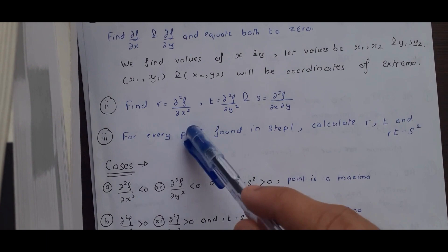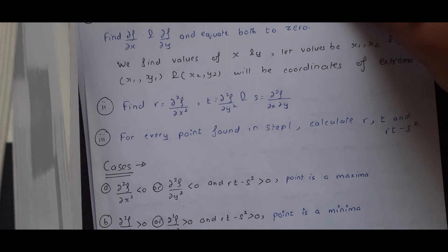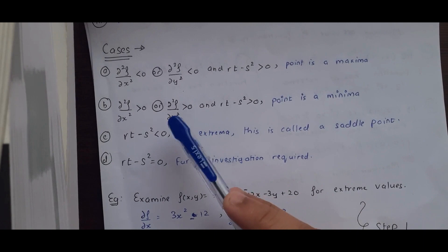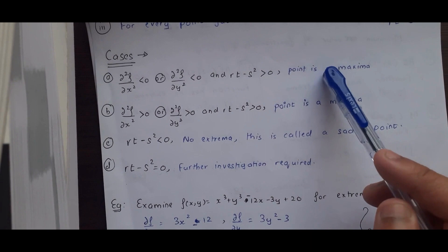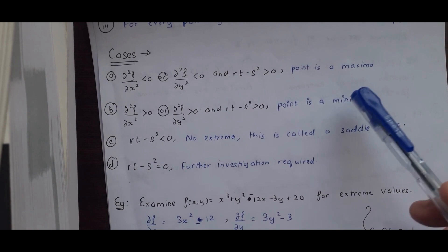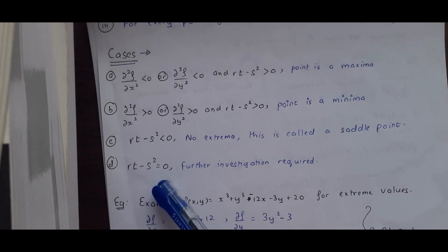For every point found in step 1 — the points (x1, y1), (x2, y2) — calculate r, t, and rt minus s². Then check the result: if r or t is less than zero and rt minus s² is greater than zero, it's a maxima. If r or t is greater than zero and rt minus s² is greater than zero, it's a minima. If rt minus s² is less than zero, no extrema exists — this is called a saddle point. If rt minus s² equals zero, further investigation is required and we cannot determine what the point is.